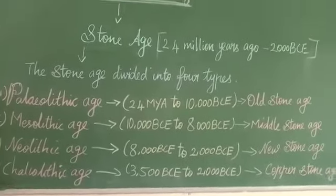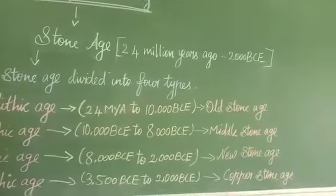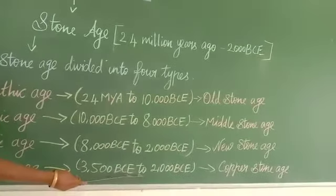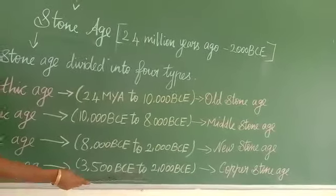The last stage is Chalcolithic Age, from 3,500 BCE to 2,000 BCE, also known as Copper Stone Age.